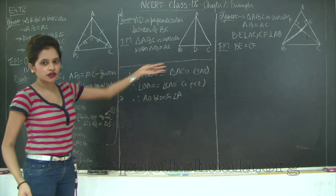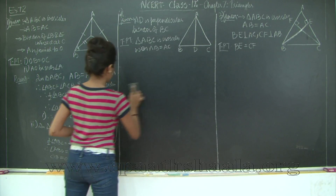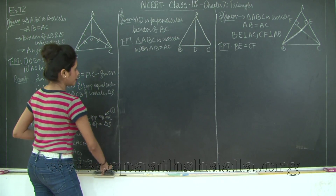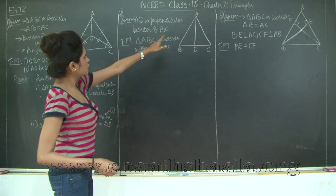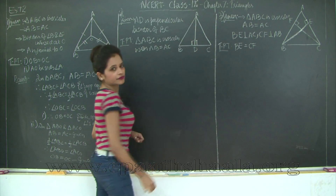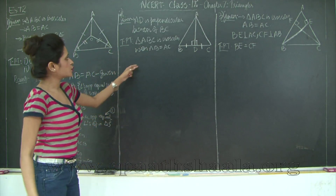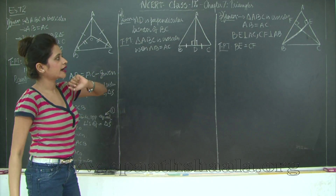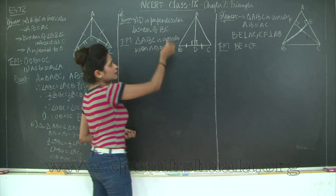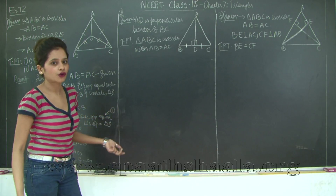Now erasing the previous section to solve question 2. AD is the perpendicular bisector of BC, so AD is perpendicular to BC, and since it is also the bisector, BD equals DC. What we need to prove is that triangle ABC is isosceles with AB equal to AC. We will take the two triangles ABD and ACD and prove them congruent, then prove AB equals AC through corresponding parts of congruent triangles.